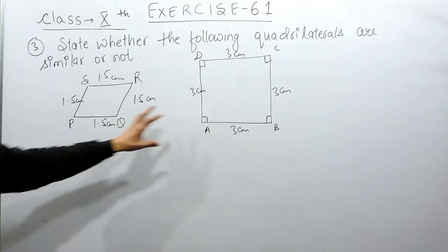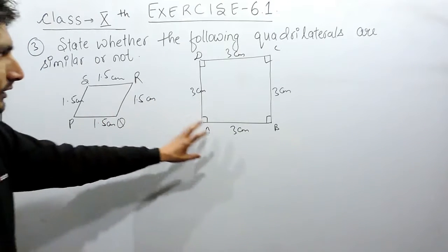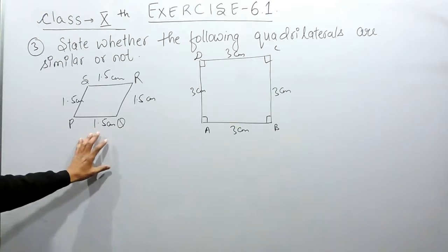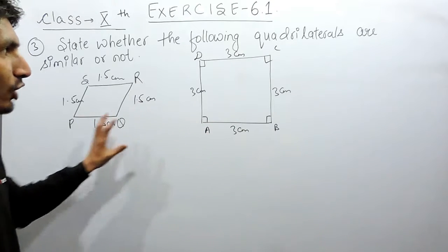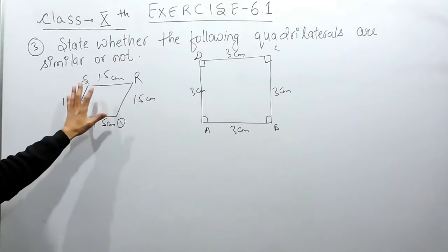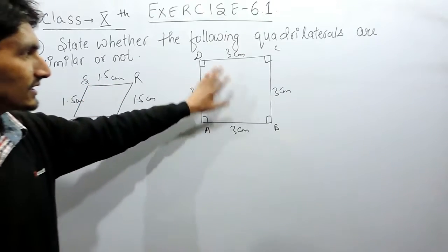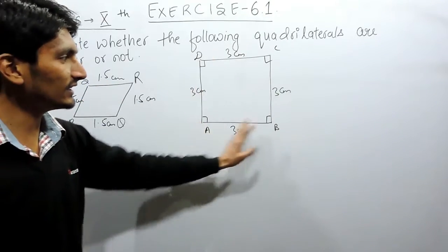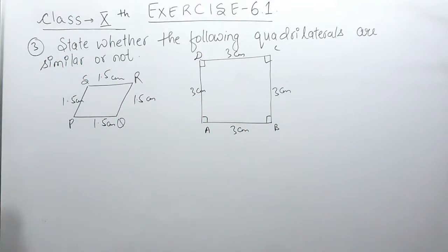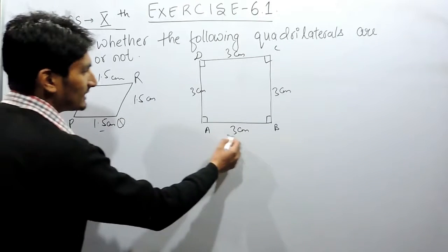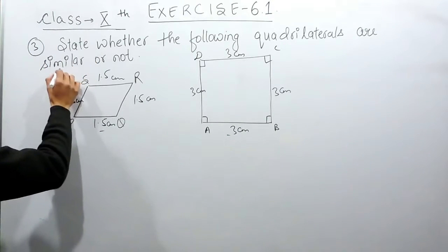If I look at these two figures, the shapes are obviously not the same — this one is a bit tilted and the other is a straight or regular figure. So we can conclude that these two are not similar figures.